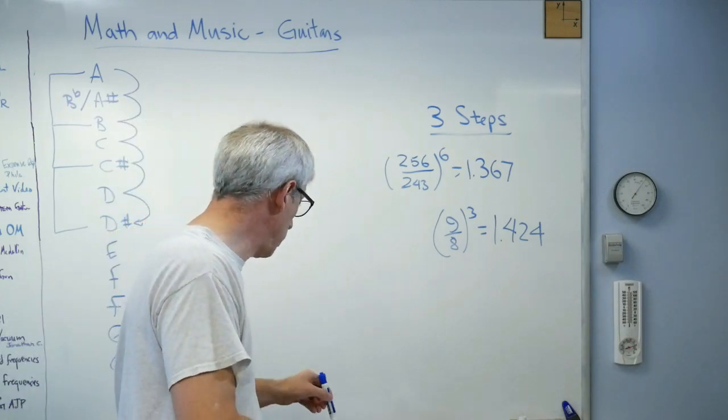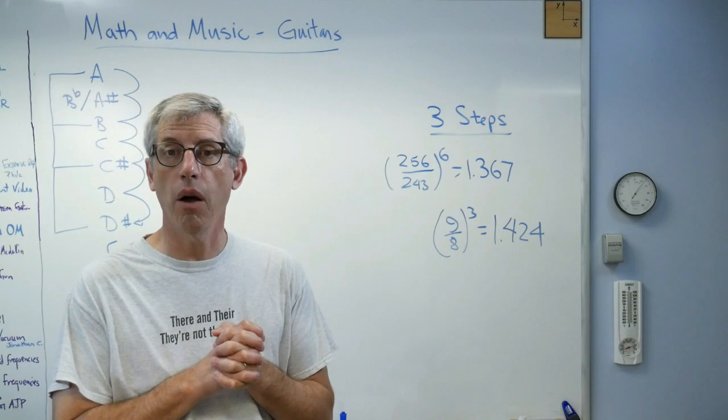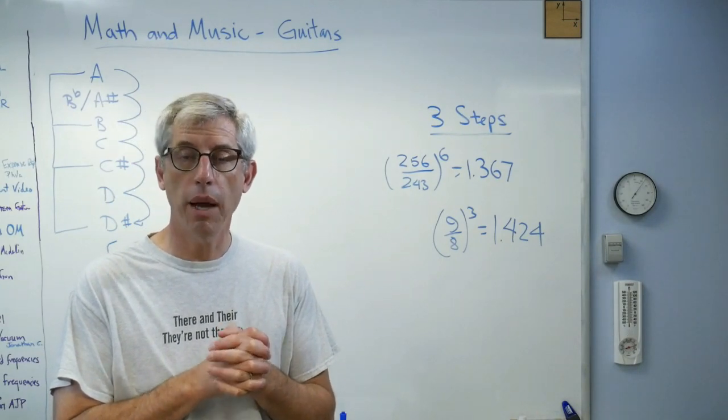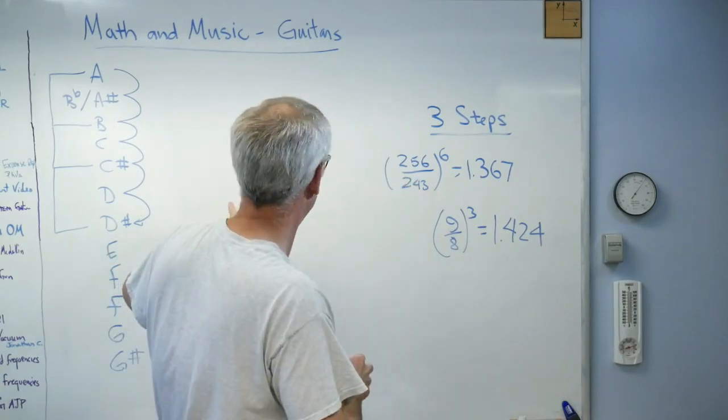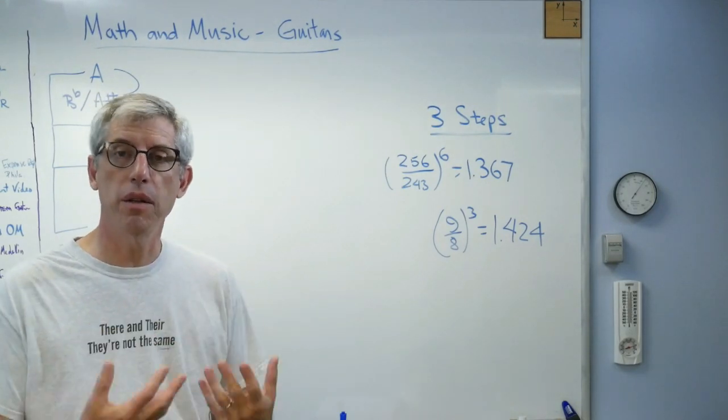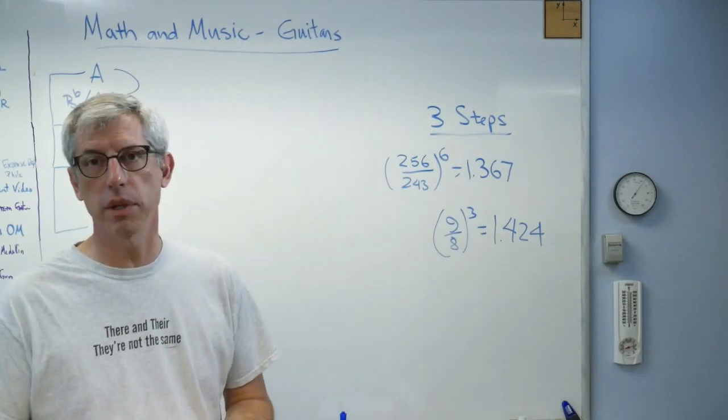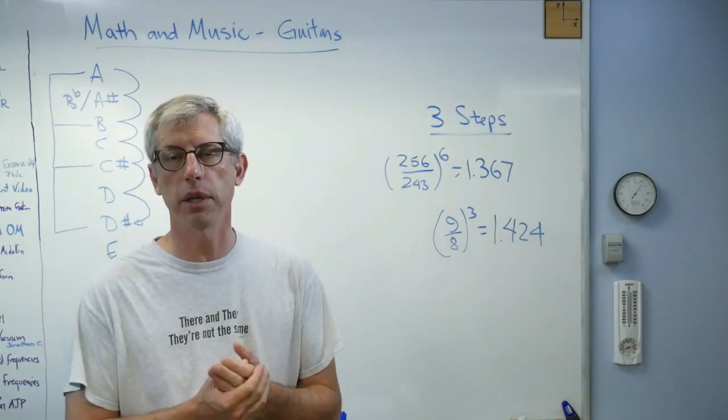All right, so the history of music in the West, anyway, is almost the history of what's called temperament. Temperament systems are the systems we use to take this, which is aesthetically pleasing, but doesn't actually work in real life, and trying to make it work. And there's all kinds of temperament systems. There's well-tempering, and just-tempering, and equal-tempering, and probably a bunch of others.